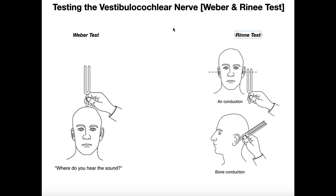Generally the Weber test is done first, because when you do the interpretation, you need to interpret the Weber test first. To conduct the Weber test, you take a tuning fork, strike it so it starts vibrating, and place one prong on the patient's forehead. You ask the patient where they hear the sound. One of three things will happen: they hear the sound equally in both ears, it lateralizes to the left ear, or it lateralizes to the right ear. When we say lateralized, we mean they hear it better on that side.